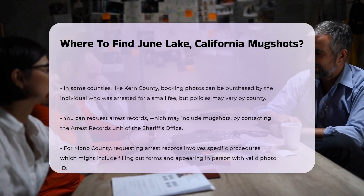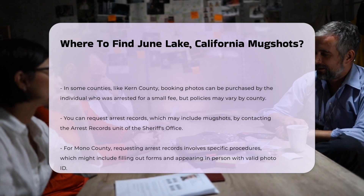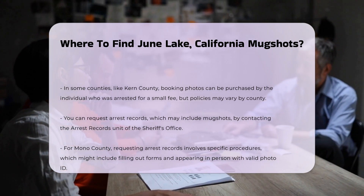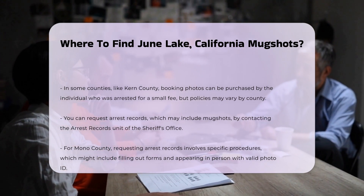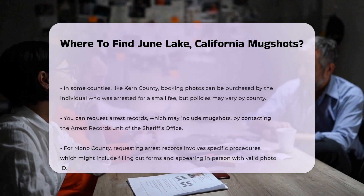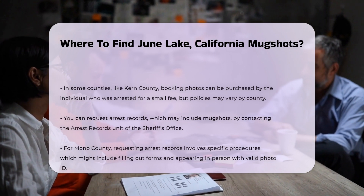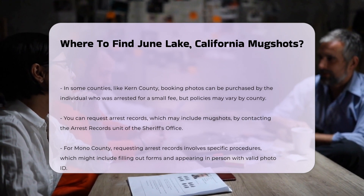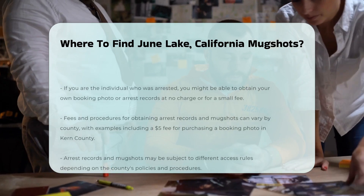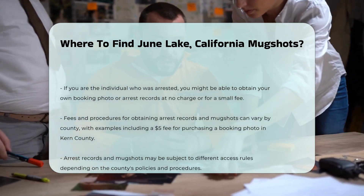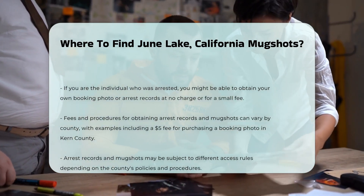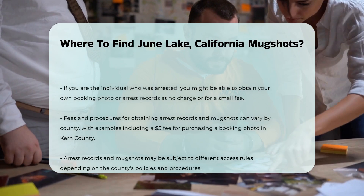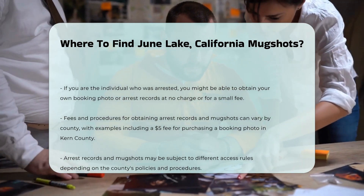You can request arrest records, which may include mugshots, by contacting the arrest records unit of the Sheriff's Office. For Mono County, you would need to go through their specific procedures, which might involve filling out forms and possibly appearing in person with valid photo ID.